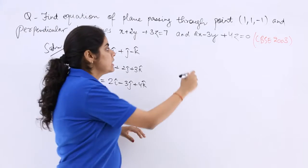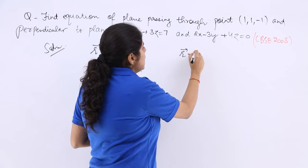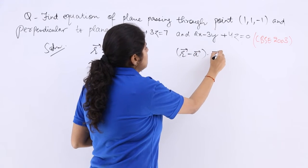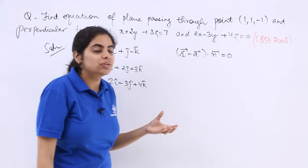Now you know that the answer can be found out by (r minus a) dot n equals 0.